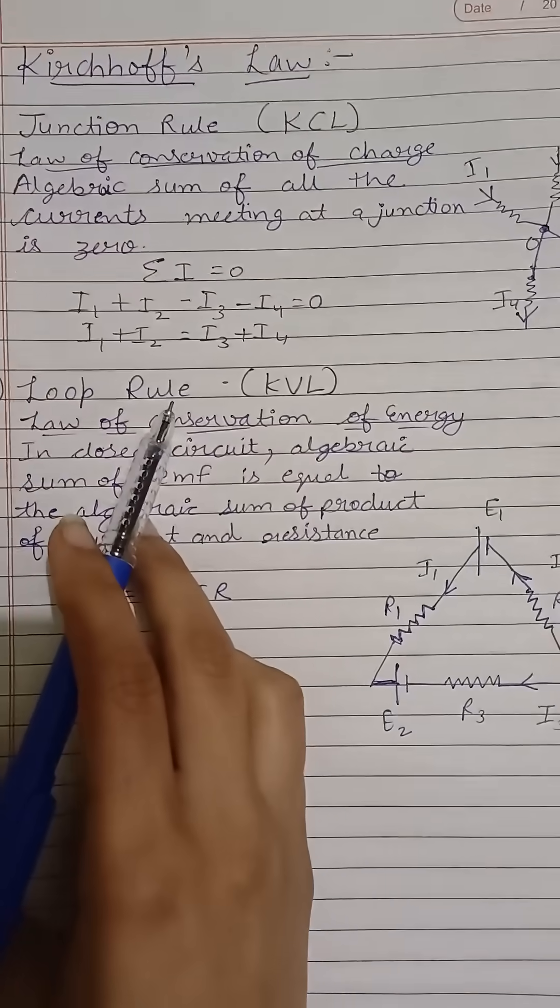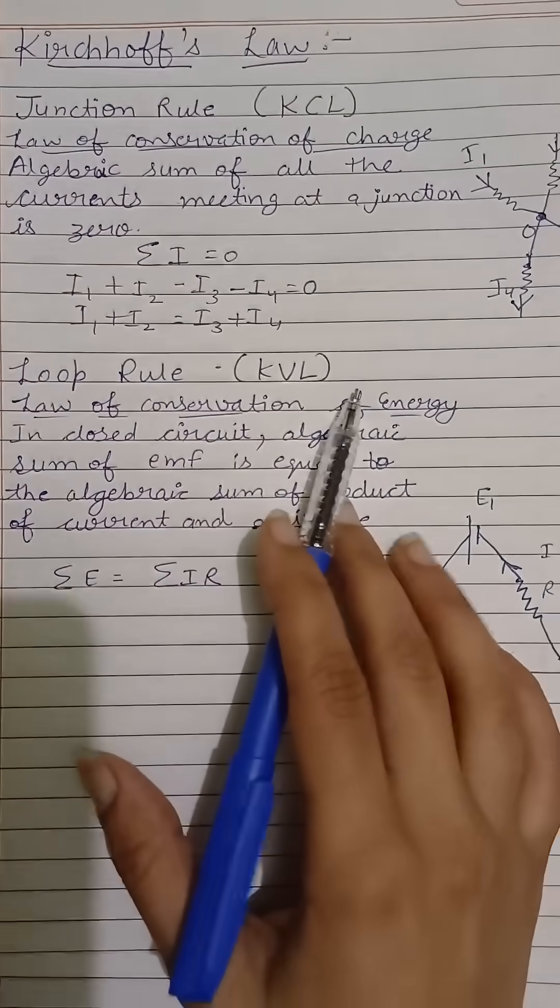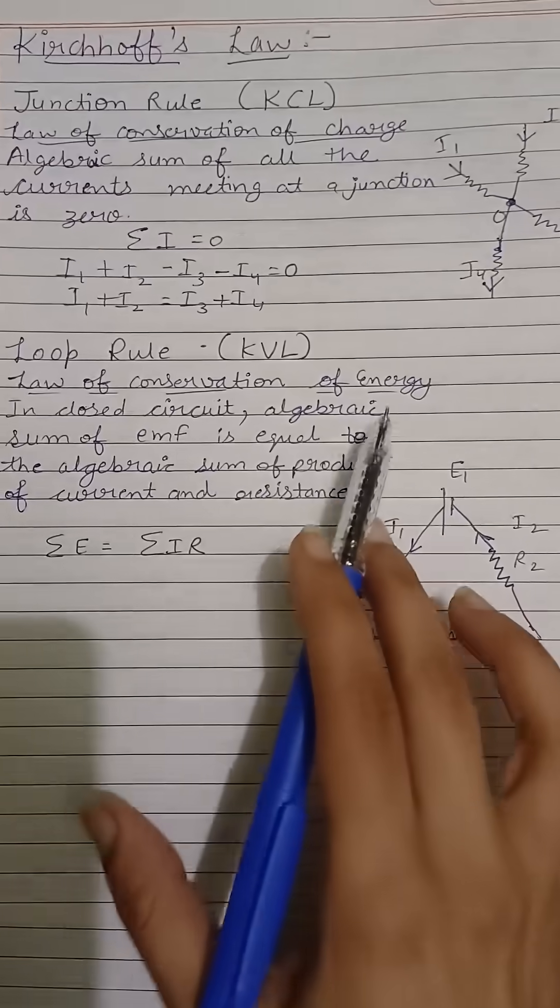The second law is the loop rule, known as KVL, that is Kirchhoff Voltage Law. This is the law of conservation of energy.